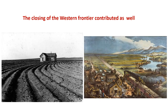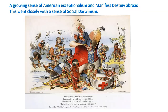Another thing contributing to the idea of imperialism was the closing of the Western frontier — we had the entire West to settle and all its raw materials, but the West is closed, and if you don't keep growing you're probably going to start dying. A growing sense of American exceptionalism and manifest destiny grew in America — we're God's people, we're different, and it's good for us to spread. This connects closely with social Darwinism — the idea of weeding out the weak.